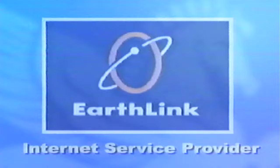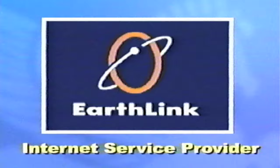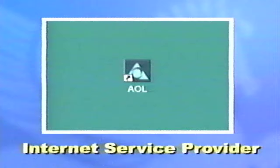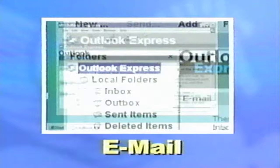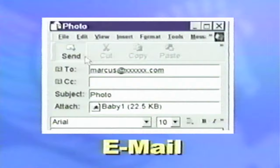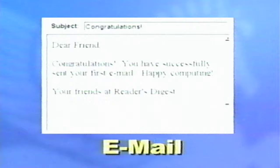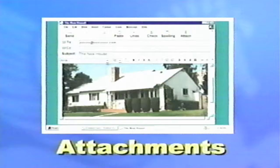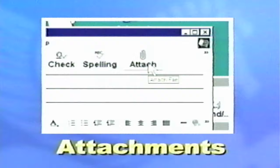Your ISP, or Internet Service Provider, connects you to the Internet so that you can use email. Some popular ISPs are MSN, CompuServe, and AOL. Email, or electronic mail, lets you send letters over the Internet. You write email on software like Outlook Express or Netscape Communicator. Once you have an email address, you can send and receive emails instantaneously from family and friends around the world. You can also send attachments with email, such as photographs. Once you have a photograph in digital form, you can attach it to your note by clicking on the Attach button at the top of your email window. When you send your letter, the picture will be sent with it.